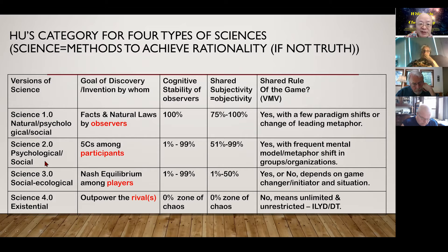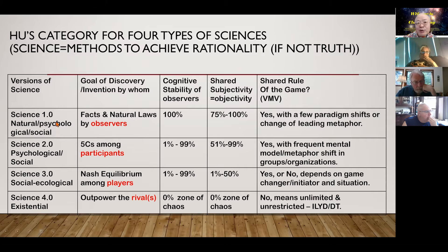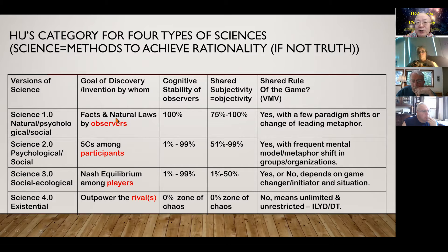I prefer to call it Science 1.0, 2.0, 3.0, 4.0. Science 1.0 starts purely from nature and psychological phenomena, touching a little bit of social — that's why people say social scientists are not that scientific, because they only had the tool of statistics and nothing else. But that was defined by their goal: to find what they call natural laws by observation.